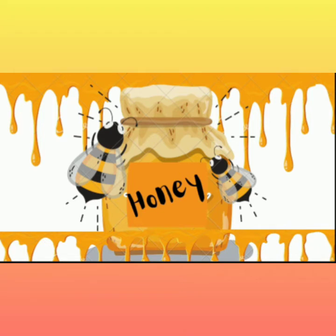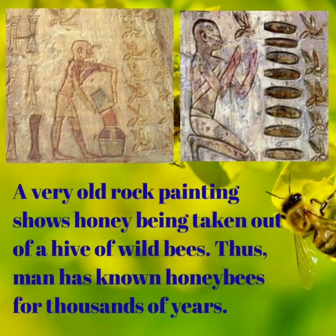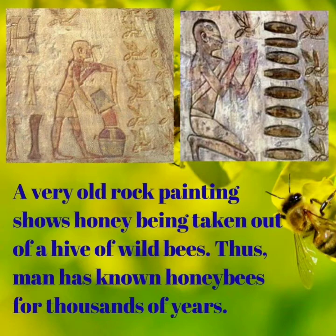Children, do you like to have honey on your bread? Have you wondered where this honey comes from? Yes, honey is made by bees. Come, let us read and find out more about bees. We are starting from page number 8. A very old rock painting shows honey being taken out of a hive of wild bees. Thus, man has known honeybees for thousands of years. Can you see the pictures made on rocks thousands of years ago? From these paintings, we came to know how honey was taken out of a hive of wild bees. Now, what do you mean by hive? Hive is a place where bees live in — like you live in a house, honeybees live in hives.